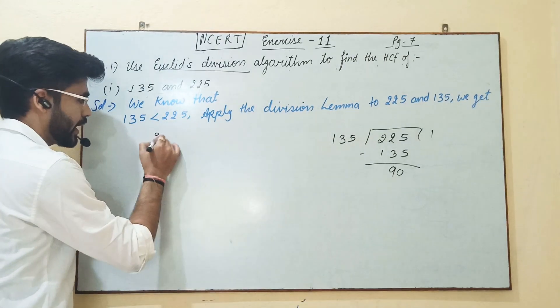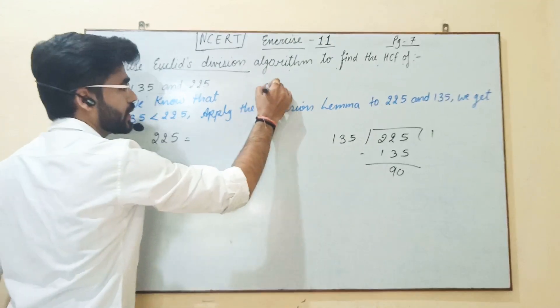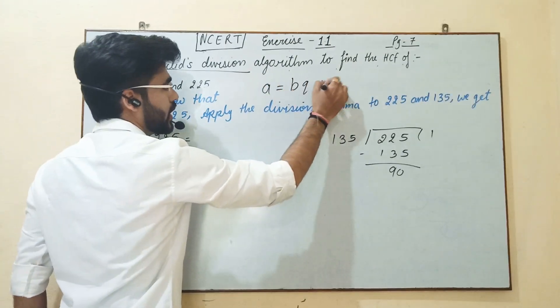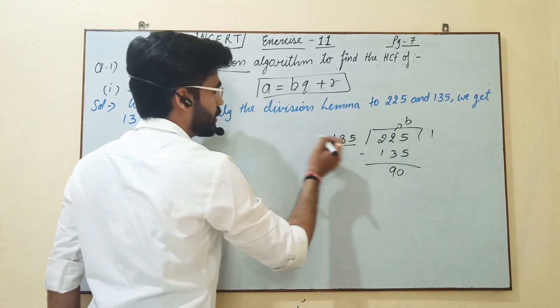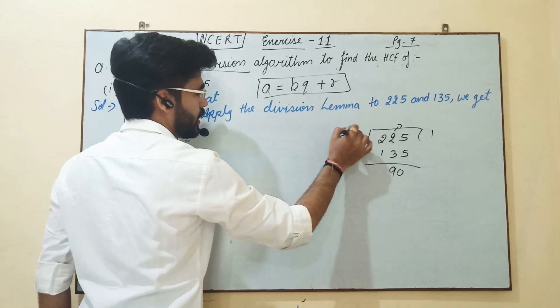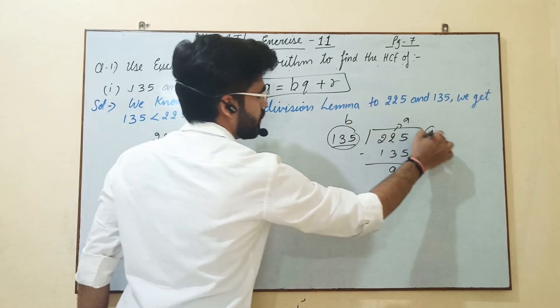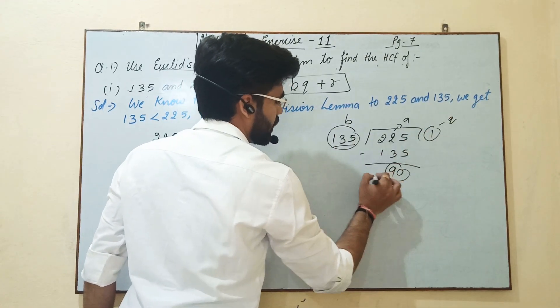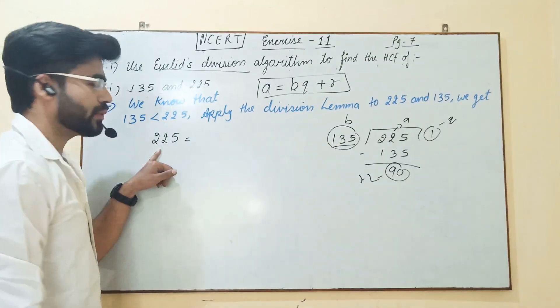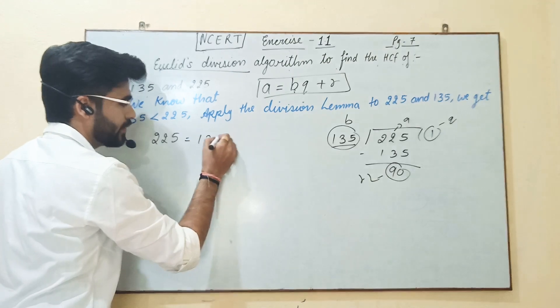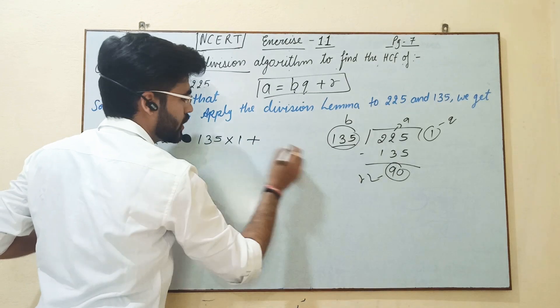Now we have to write 225 in this form by Euclid's division lemma. It is A equals BQ plus R. Here 225 is A, 135 is B, 1 is quotient and 90 is remainder. So then we have to put 225 equals 135 into 1 plus 90.